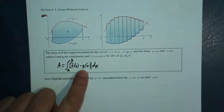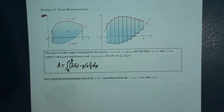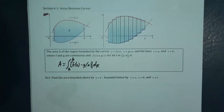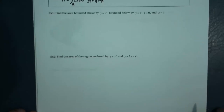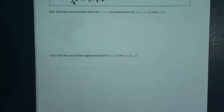It's always the one on top minus the one on the bottom. Later when we have x as a function of y, it'll be the right function minus the left function. So let us begin with example one: find the area bounded by the curve y equals e to the x, bound below by y equals x, and x equals zero and one.